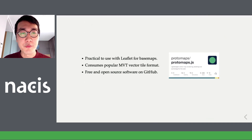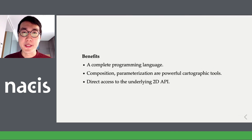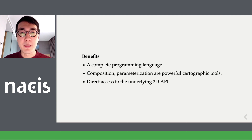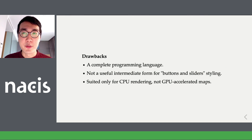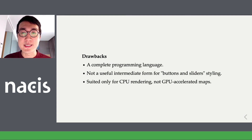That is a whirlwind overview of the features of this cartographic language embedded inside of JavaScript. It is on GitHub, practical to use with Leaflet for base maps, consumes the popular MBTiles vector tile format, and is free and open source software. The benefits of doing things this way are that it is a complete programming language, so concepts like composition and parameters are really powerful cartographic tools, and you have direct access to the underlying API. The drawbacks are also that it's a complete programming language — typos will crash your program, it's inaccessible without a programming background, it's very different from a GUI experience like Photoshop, and it's suited only for CPU rendering rather than newer GPU-accelerated experiences.